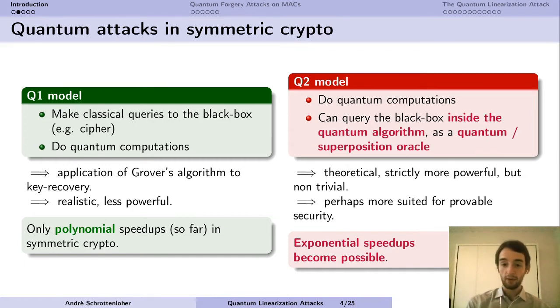In this situation so far we have only polynomial speedups on symmetric crypto attacks. Now there is a stronger model, strictly stronger, in which the adversary can do quantum computations.